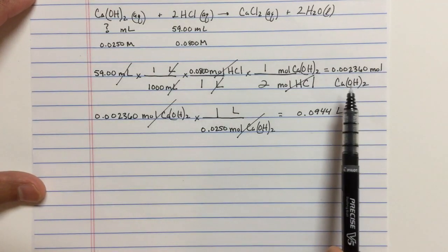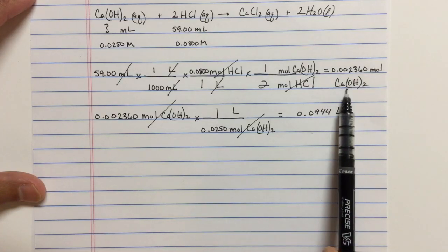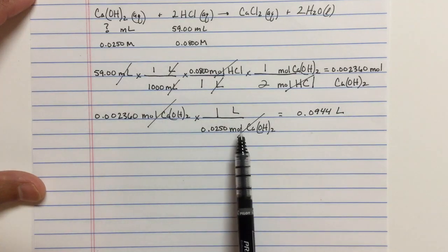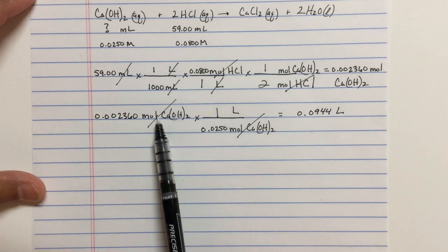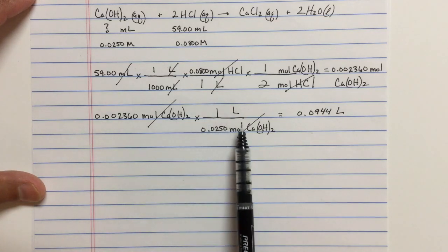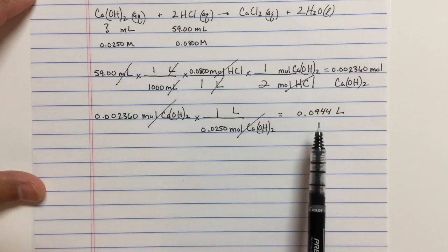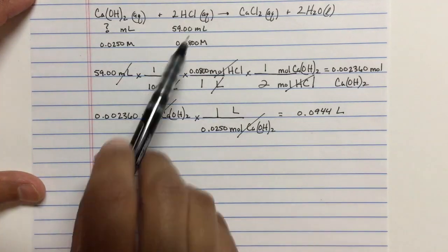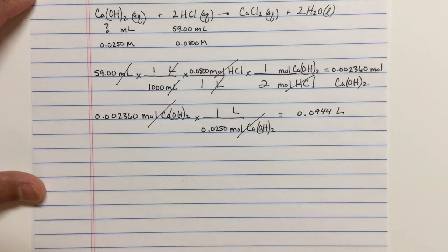We took our moles of calcium hydroxide - the moles that react with my HCl. Using the molarity, I converted moles of calcium hydroxide to the volume in liters. So this is the volume in liters. We've actually found the volume that it's going to take to react with this volume and that concentration of HCl.